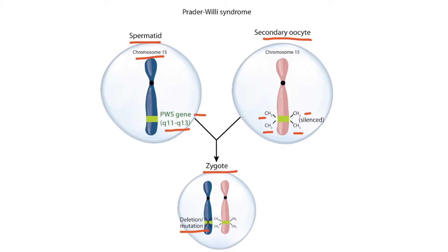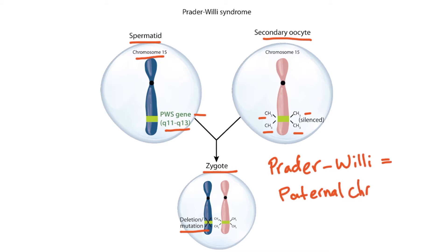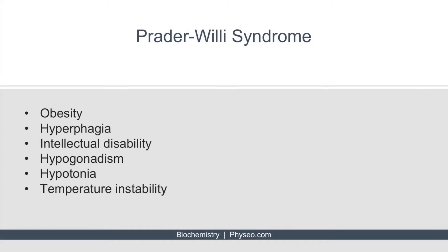Some students remember that the paternal chromosome is deleted by using the letter P in Prader-Willi syndrome. The symptoms of Prader-Willi syndrome include obesity, hyperphagia, intellectual disability, hypogonadism, hypotonia, and temperature instability. The two most important of these to remember are probably obesity and hyperphagia.